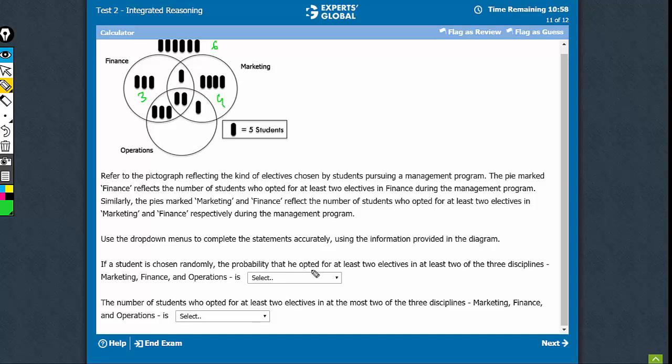Okay, so probability that a student opted for at least two electives, at least two of the three disciplines. So basically, these values 1, 2, 3, 6, 7 out of total. These are 7, 10, 14, 20, 7 out of 20. That's 35%. Let's look at the second question.